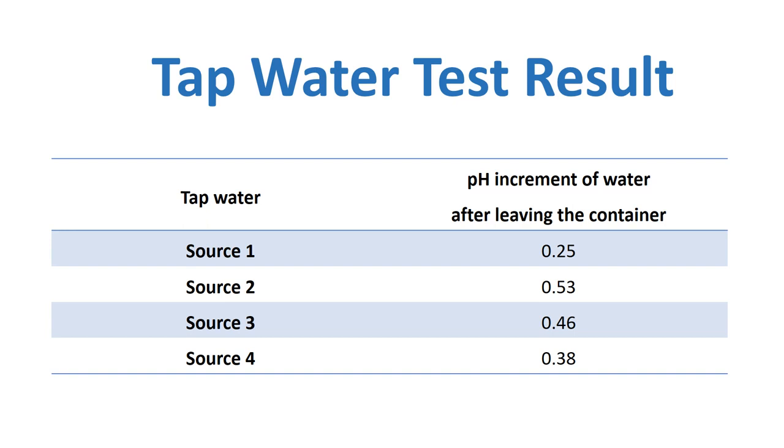When I repeat with tap water, I take from different sources and I use four sources here. Source one, the pH increment recorded was 0.25. However, when I use source two, the pH increment was 0.53. Source three, increment was 0.46 and source four increment was 0.38. When we look at the results, the pH increment was not constant. Such phenomenon was because the water contains different contamination. Such contamination will affect the final results of the pH. However, all the sources show pH will increase, and this shows that electrons were generated in the water.